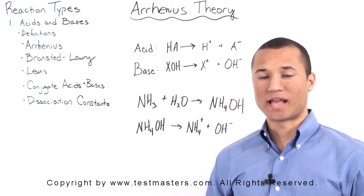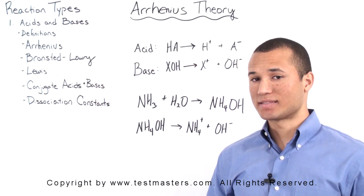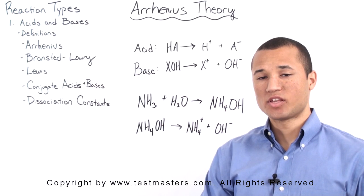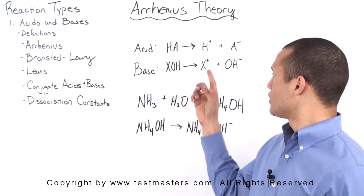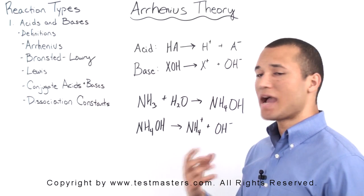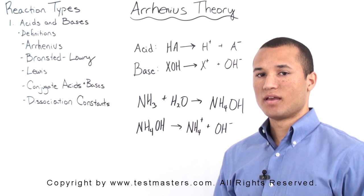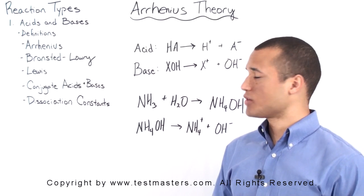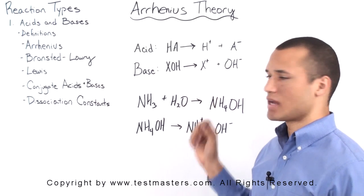Arrhenius provides our earliest definition for an acid and a base. An acid, according to Arrhenius, is a substance that donates protons, or rather, hydrogen cations. A base, on the other hand, is a substance that donates hydroxide anions.